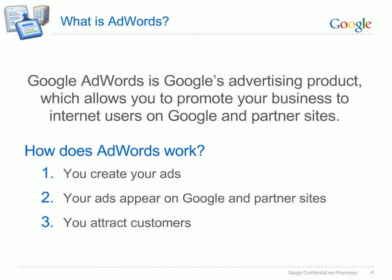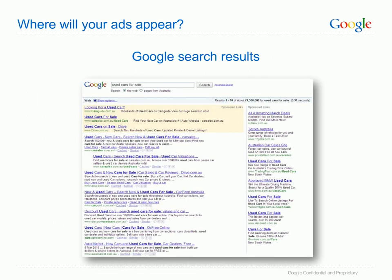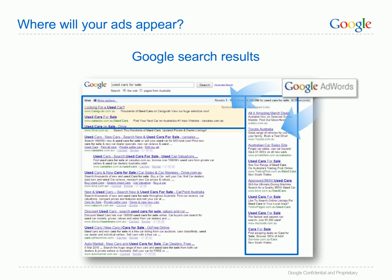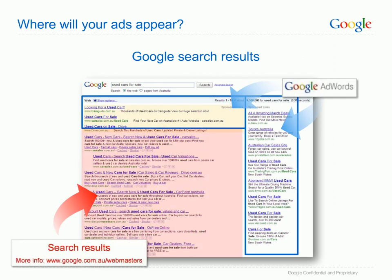You attract customers. People can simply click your ad to visit your website, make a purchase, or learn more about you. AdWords ads appear on the Google search results page above and to the right-hand side of the search results. The search results in the main section of the page are completely separate to AdWords ads.